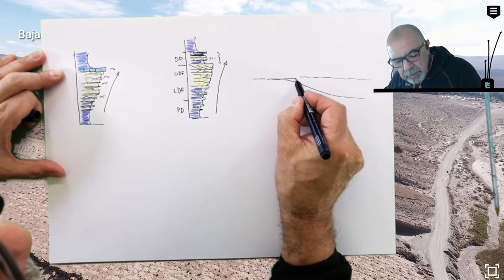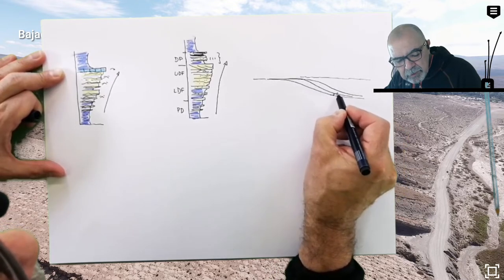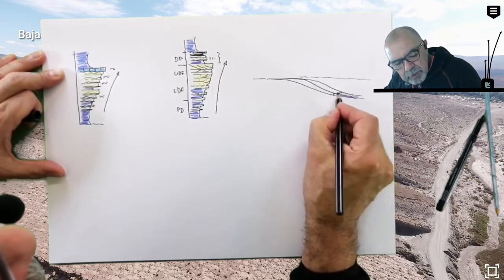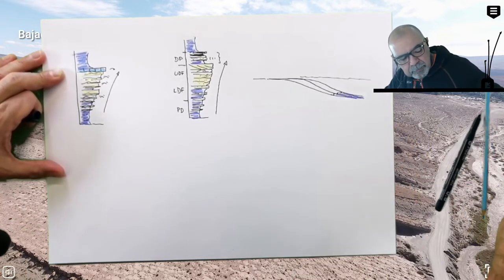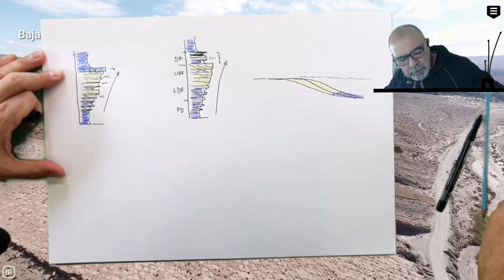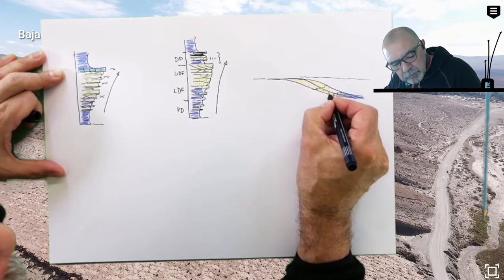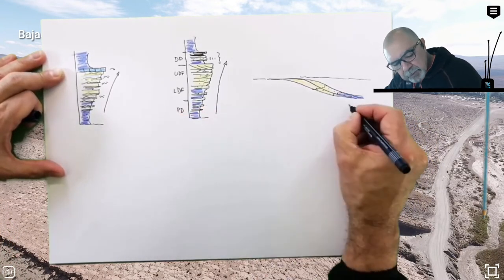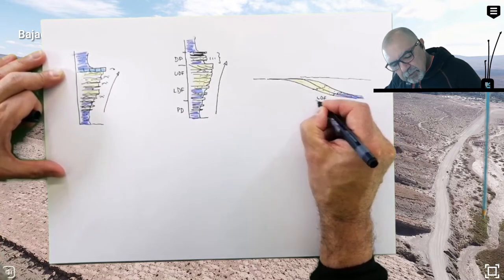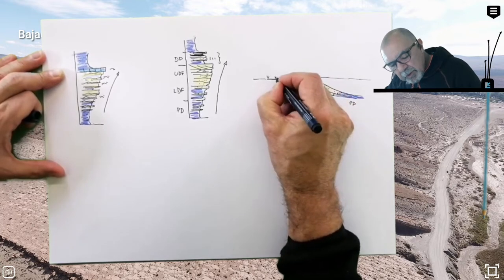When sediments are supplied toward the basin, so we have this transition between pro-delta, lower delta front, upper delta front.